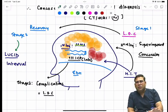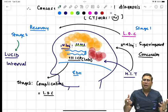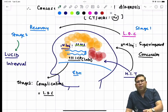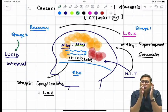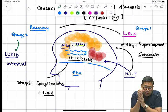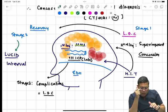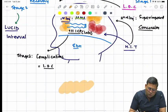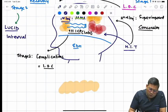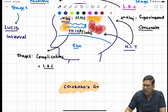So next time someone says lucid interval can be seen in head injuries, yes it can be seen because it is due to superimposed concussion. This is very important. I will cover EDH separately. Try to understand what is Colorado's grading. Colorado's grading is a grading for concussion, and this is very simple. Let us understand that Colorado's grading.